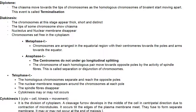Diplotene comes before diakinesis. In diplotene, the tips of some chromosomes show chiasmata. In diakinesis, the fourth sub-stage of prophase I, chromosomes appear thick, short, and distinct. The nucleolus and nuclear membrane disappear and chromosomes are set free in the cytoplasm.